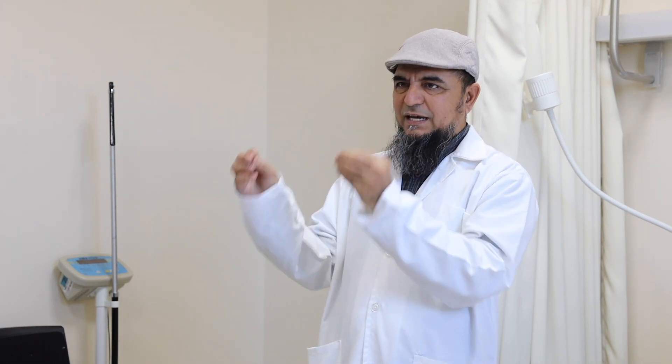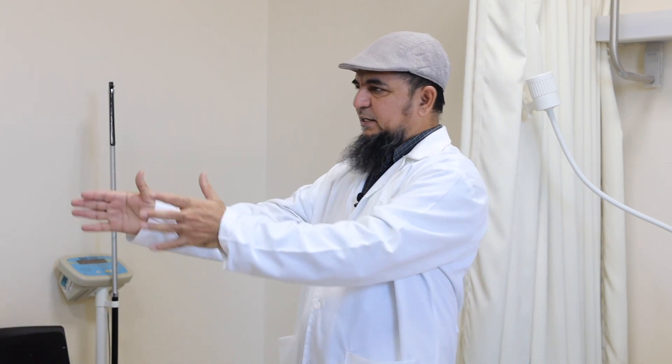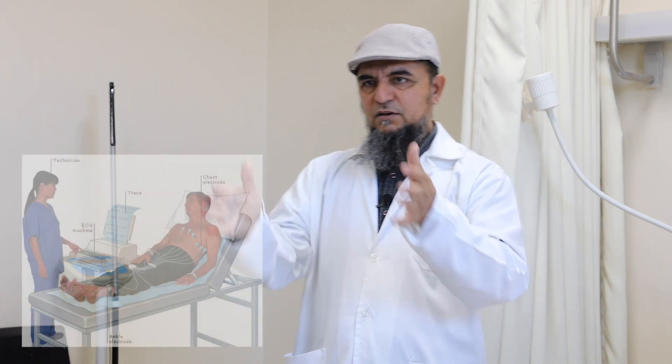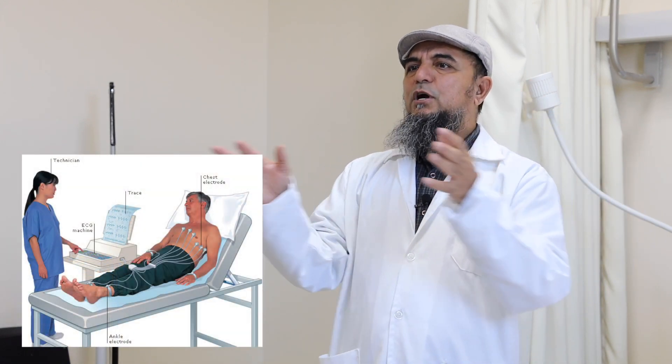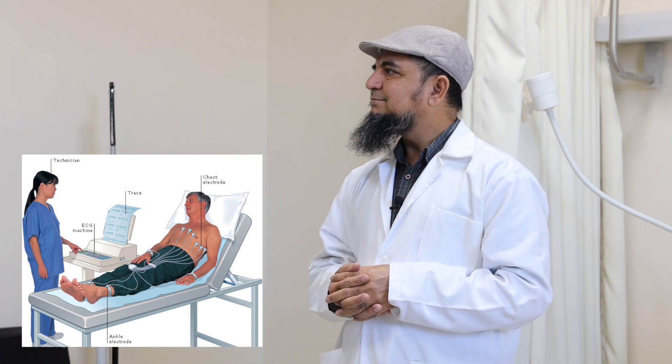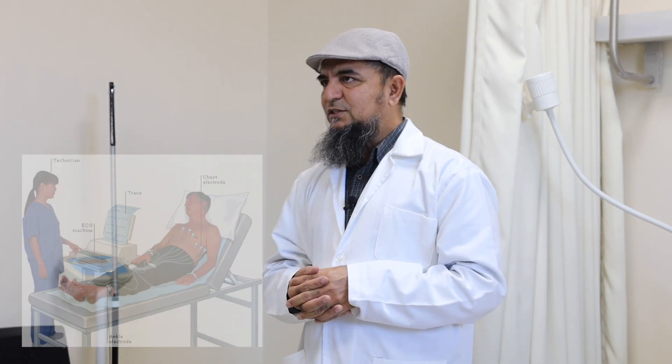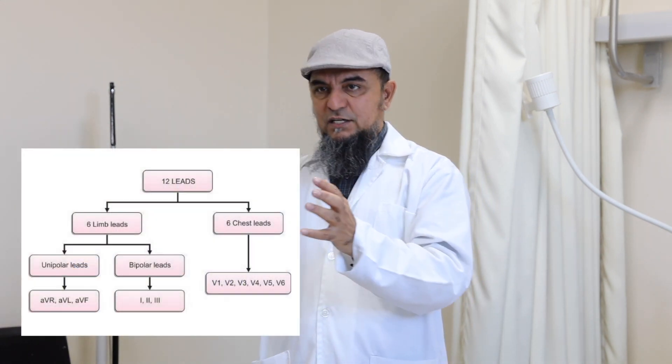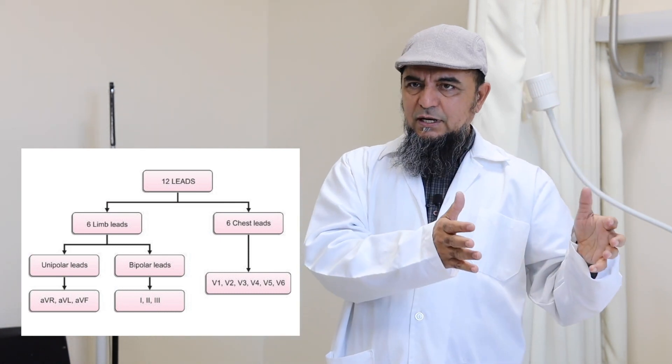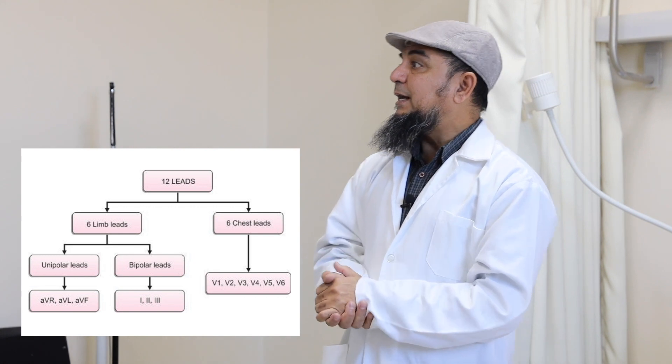ECG is an electrical representation of the mechanical activity of the heart. The body is connected with the machine with the help of leads. There are different types of leads: bipolar leads and unipolar leads. In total, there are 12 leads — some of them are bipolar and some are unipolar.